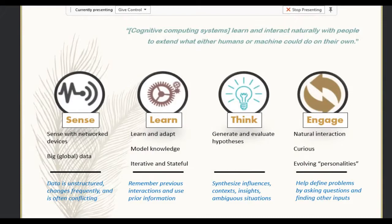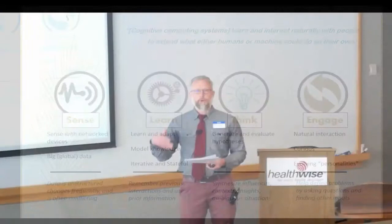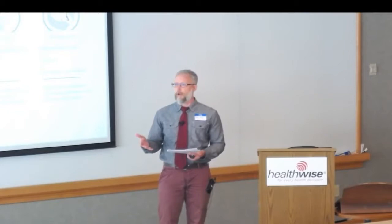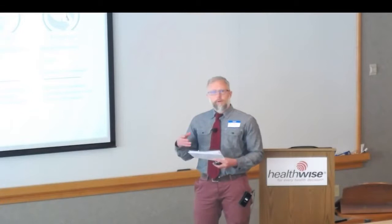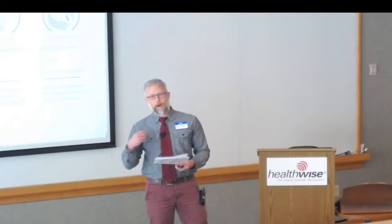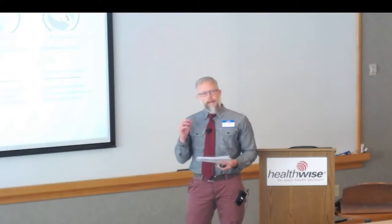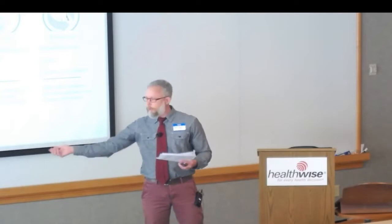They interact with us in very natural ways. We've seen Siri and Cortana — they are conversational platforms. But those aren't the only natural ways we can interact with these things. They are more and more having personalities, and these personalities aren't static. They're evolving as they learn about us as users and as they learn about their environment. And they are curious — so when we can't figure out what our problem is or even what our goal is, these systems will ask us questions and pull data in. These are the hallmarks of a cognitive system.